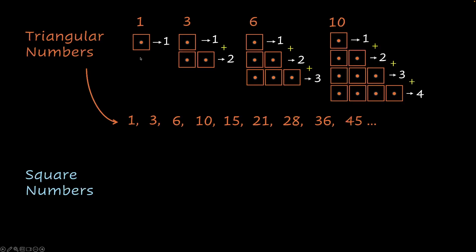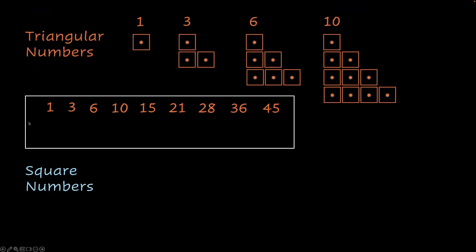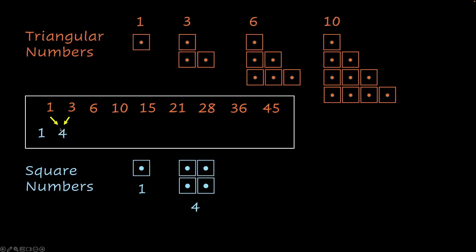Next, let's look at how we can combine these to get a square number. Here are the triangular numbers we found. The first square number is 1 — this clearly looks like a square, which is why the first square number is 1. So 1 is both a triangular as well as a square number. Now let's combine: I'm sure you can imagine slotting this over here, so we get 1 plus 3, which gives you 4. So 4 is the next square number.